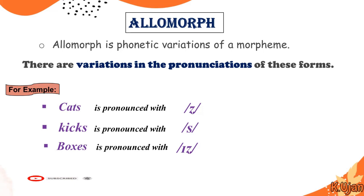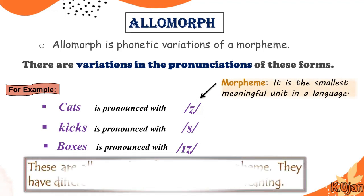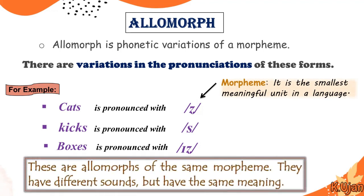A phonetic variation of a morpheme is known as an allomorph. What is a morpheme? A morpheme is the smallest meaningful unit in a language. For example, the plural endings /s/, /s/, and /ɪz/ give meaning and make differences between words. When we add them, these are allomorphs of the same morpheme — they have different sounds but the same meaning.